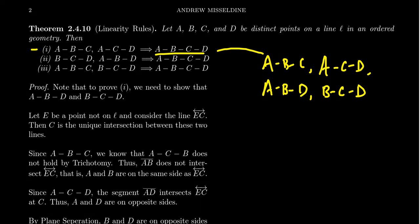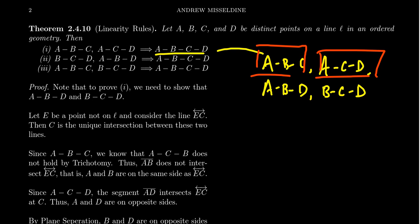In this video I'm going to prove the first linearity rule, and leave it as an exercise to prove linearity rules two and three — they'll be strikingly similar to the proof of number one. By assumption, we know B is between A and C, and we know C is between A and D. We need to prove that B is between A and D, and that C is between B and D.